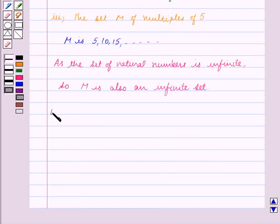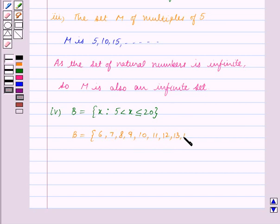The fourth part is set B equals x such that 5 is less than x is less than or equal to 20. We write down the elements of B which are 6, 7, 8, 9, 10, 11, 12, 13, 14, 15, 16, 17, 18, 19 and 20. We can see that we can count the number of elements of B. So, B is a finite set.